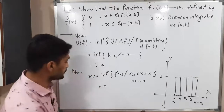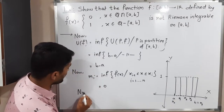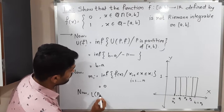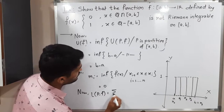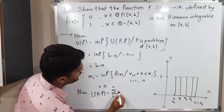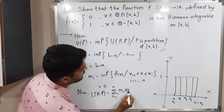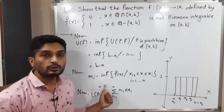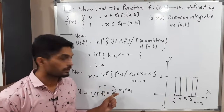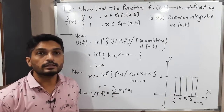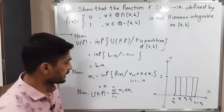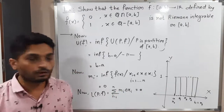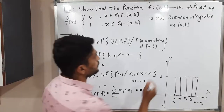Now we find the lower sum L(P,f) = Σᵢ₌₁ⁿ m_i · Δx_i. Since m_i = 0, we have 0 times anything equals 0, so the entire summation is 0. Therefore L(P,f) = 0.